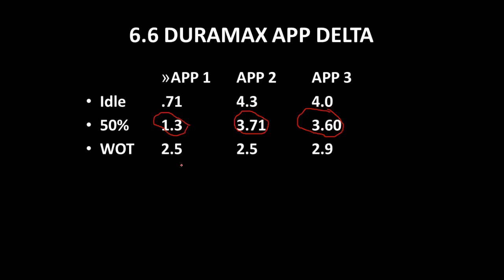At wide open throttle, APP number one continues rising from about 1.3 to about 2.5 volts, while the others continue to drop. Notice that each of those voltages can be correlated to determine the position of the sensor by looking at the different voltage values. We use that for diagnostics as well, so we can tell if one of the sensors is faulty or not.